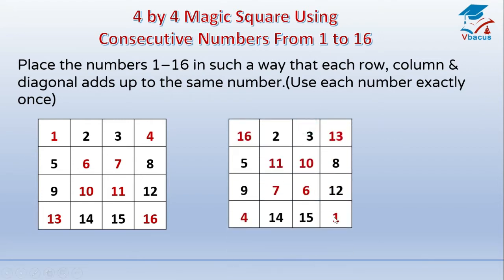So I have replaced all the numbers. 16 has gone here, 1 has come here, 4 has come here, 13 has gone there. Inside the square, 11 has come here and 6 has come here, 7 has gone there and 10 has taken the place of 7.